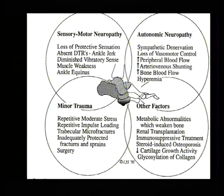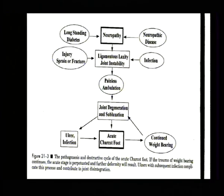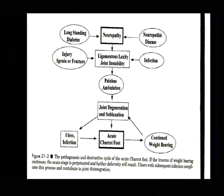This is classically described as four etiological factors: sensory-motor neuropathy, autonomic neuropathy. Then many patients have nephropathy as a contributing factor, and a minor trauma which can be surgical trauma. This is how the whole cycle starts — neuropathy which causes ligament injury, painless ambulation, joint destruction, ulceration, infection.